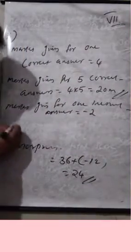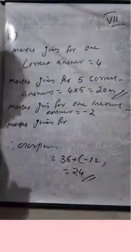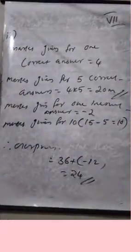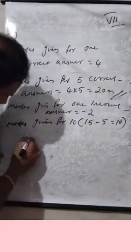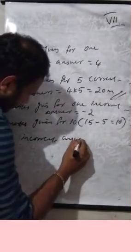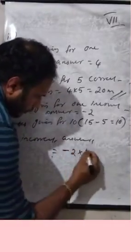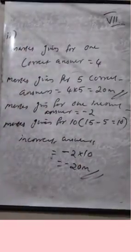Marks given for 10 incorrect answers: 15 minus 5 equals 10. So minus 2 into 10 equals minus 20 marks.